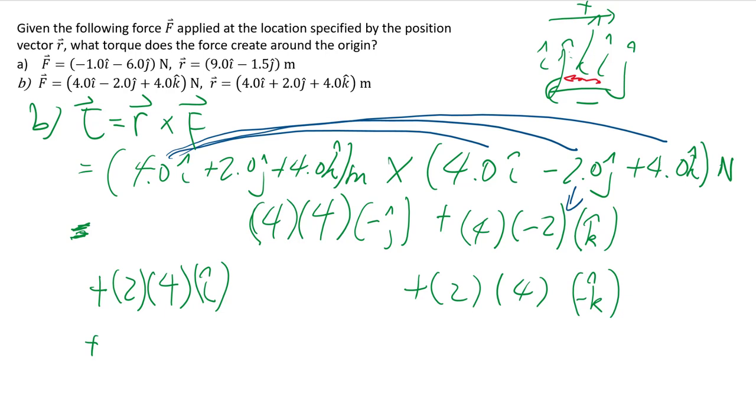And finally, we've got the K term. So K cross I is positive J. 4 and 4, put the plus sign, and then K cross J will be my negative I. So we've got 4 and minus 2.